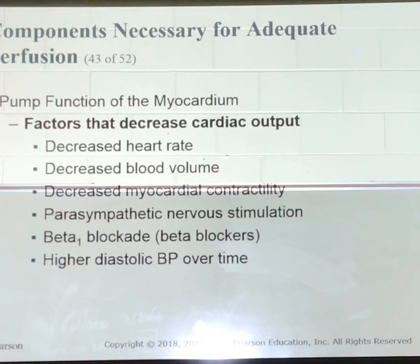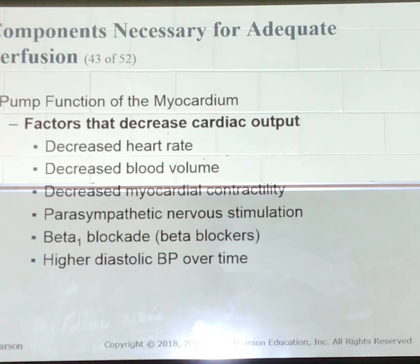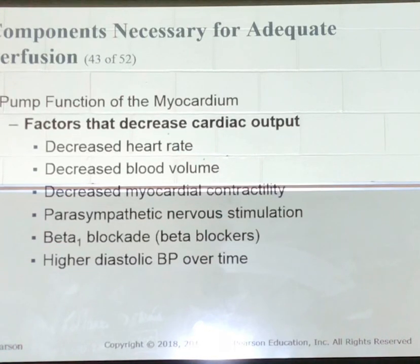Factors that decrease cardiac output: decreased heart rate, decreased blood volume, decreased myocardial contractility, parasympathetic nervous system stimulation, beta-1 blockade — which are beta blockers. If you see this medicine in the generic form, it usually ends in O-L-O-L. They're '-olols.' And a higher diastolic blood pressure over time.